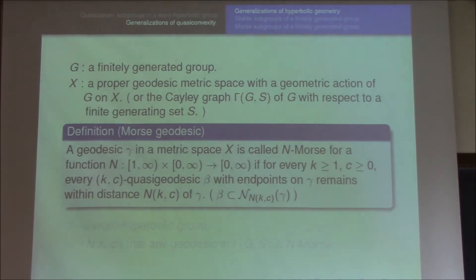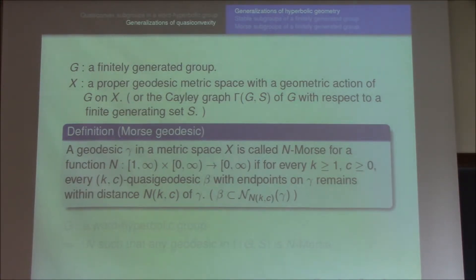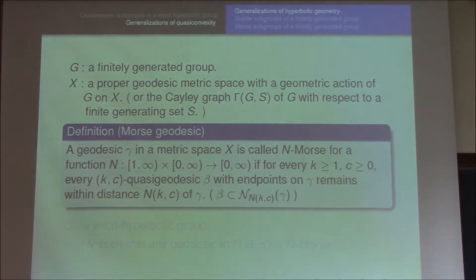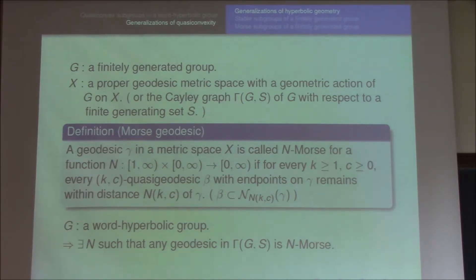A geodesic gamma in a metric space X is called N-Morse for a function N from [1,∞) × [0,∞) to [0,∞), if for every K,C and every K,C quasi-geodesic beta with endpoints on gamma, beta remains within distance N(K,C) of gamma. This is a hyperbolic-like geodesic because when the group is a word hyperbolic group, there exists a function N such that any geodesic in the Cayley graph is N-Morse. We call N the Morse gauge.